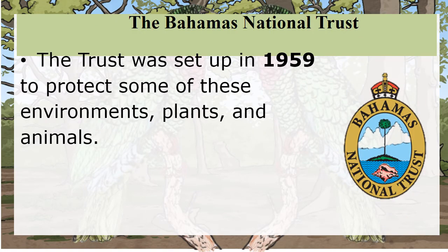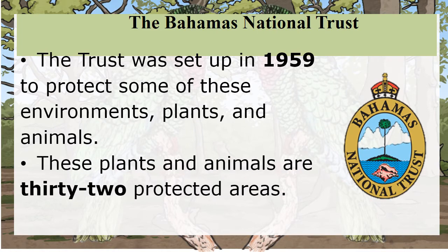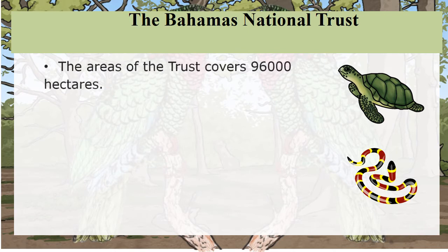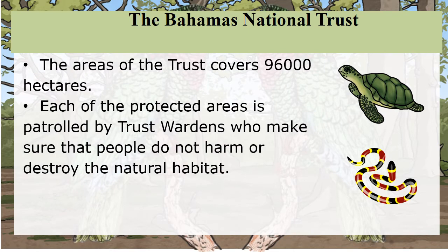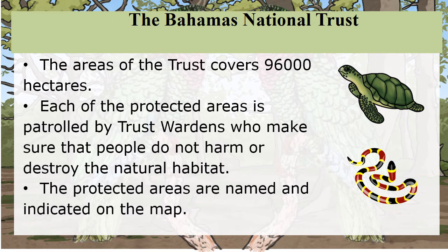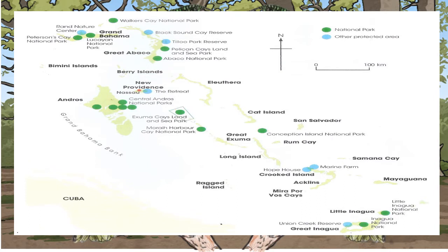The Bahamas National Trust was set up in 1959 to protect some of these environments, plants, and animals. These plants and animals are in 32 protected areas, covering some 96,000 hectares. Each protected area is patrolled by Trust Wardens who make sure that people do not harm or destroy the natural habitat. The protected areas are indicated on the map — in green are the national parks, and in blue are the other protected areas.